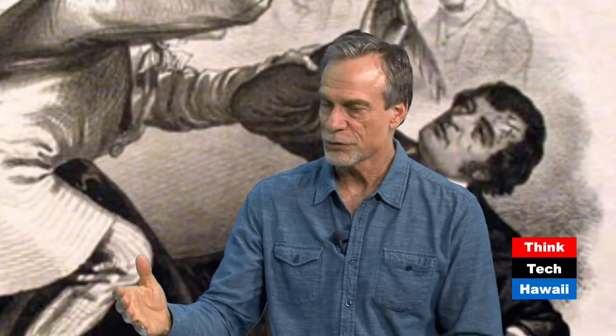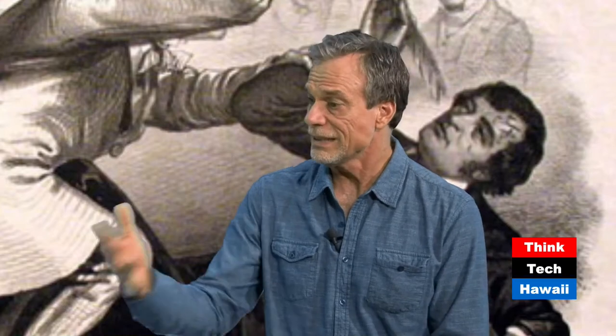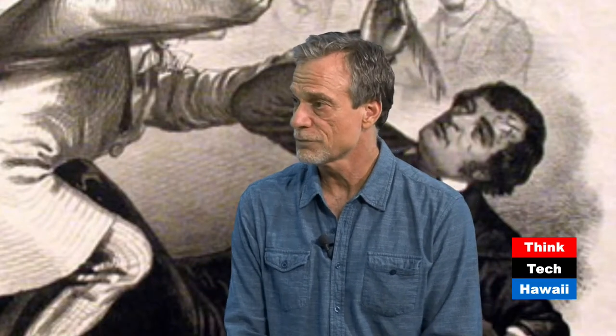Brown took his sons and a few others, attacked the arsenal — which was very poorly guarded — and was able to take it over for a few hours. Eventually he was captured and most of his crew was killed. Robert E. Lee was the commanding officer who rode into Harper's Ferry with troops to put down the rebellion and capture John Brown.